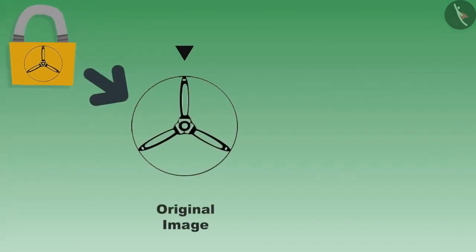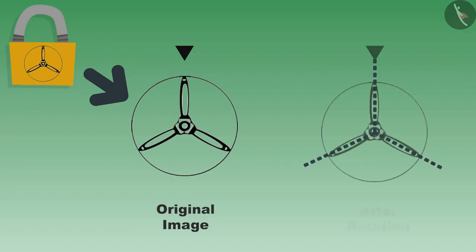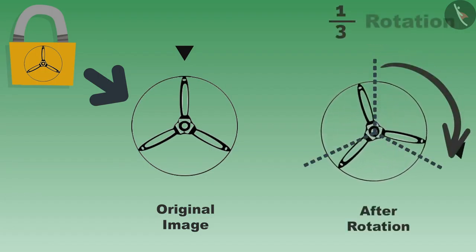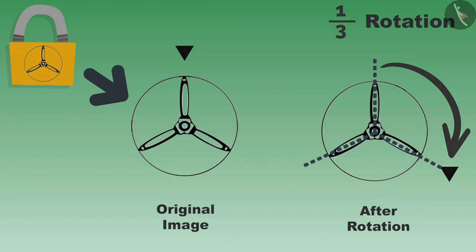Dear students, let us understand the cleverness of Tenali Rama. Look at this picture. Let us rotate by one-sixth. In order to do this, first of all, we will divide this figure into six equal parts with the help of six lines across the center.